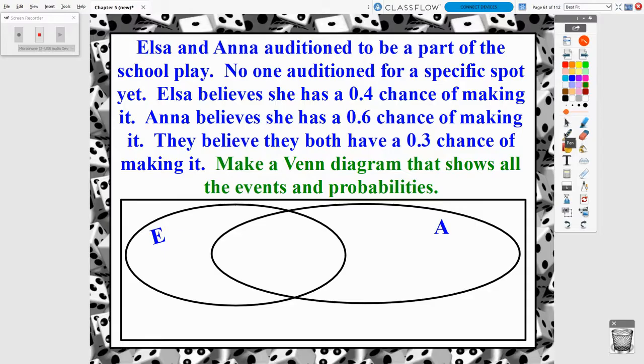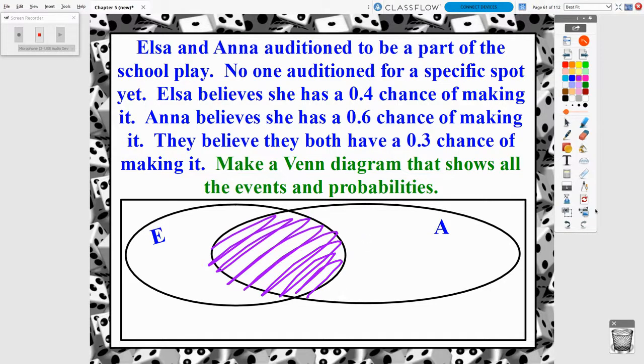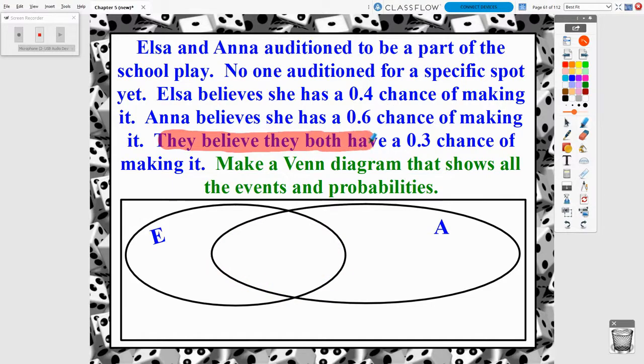We're going to look at one example, and then we'll be done with the video. So Elsa and Anna auditioned to be a part of the school play. No one auditioned for a specific spot yet. But Elsa believes she has a 0.4 chance, a 40% chance of making the play. Anna believes that she has a 60% chance of making it. And they believe that they both have a 30% chance of making the big show. So make a Venn diagram that shows all of the events and the probabilities. So I've got this already kind of set up here. And you might go, aren't you getting ahead of yourself there? How do you know that there's going to be overlap here? Well, we were told they believe that they both have a 30% chance of making it. So there is this possibility that they both are in the show.